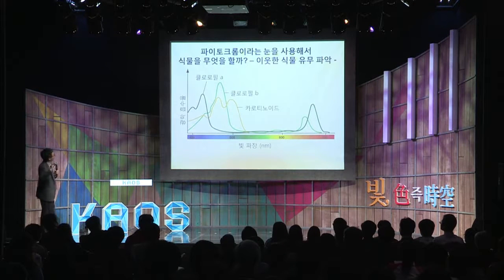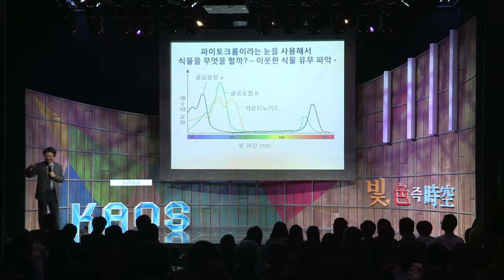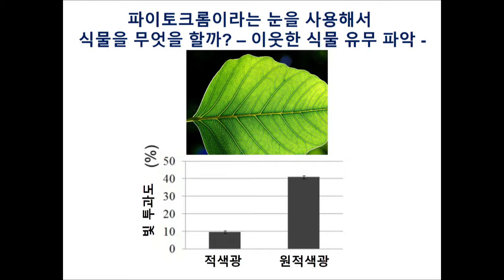식물은 광합성을 하기 위해서 청색광과 빨간색 빛을 흡수한다고 했어요. 흡수를 해버리고 나면 통과한 빛에는 빨간색 빛이 거의 없겠죠. 실제로 잎사귀 하나에 빨간색 빛을 100% 준 후에 얼마나 통과하나 조사해봤습니다. 적색광의 경우 아주 얇은 잎사귀 하나만 썼음에도 불구하고 90%는 흡수해버리고 통과하는 빛은 10% 정도밖에 안 돼요. 그에 비해서 730나노미터 정도의 원적색광은 같은 잎사귀를 통과했을 때 훨씬 더 빛이 잘 통과하는 걸 볼 수 있어요.